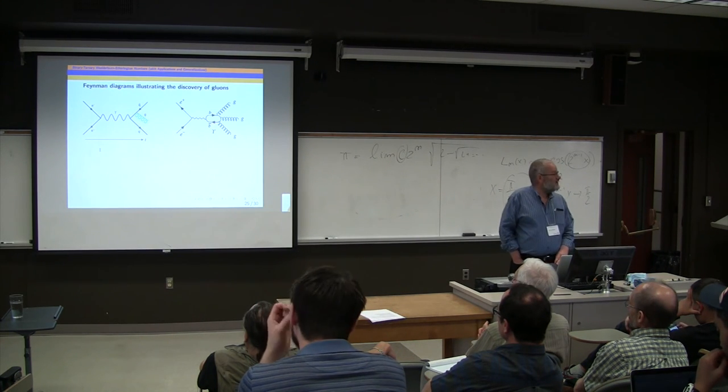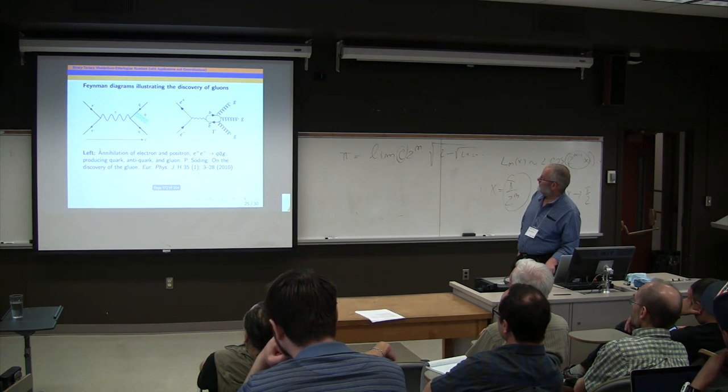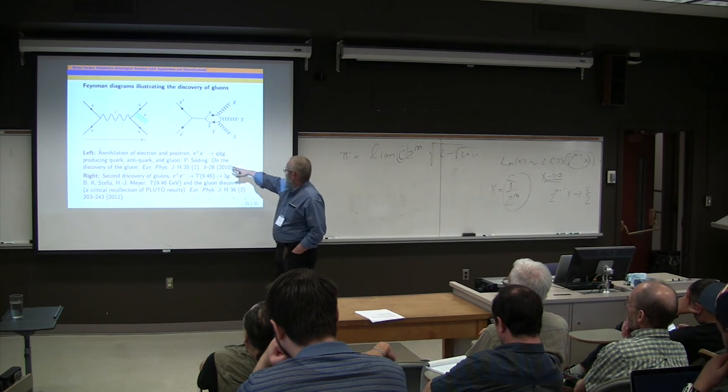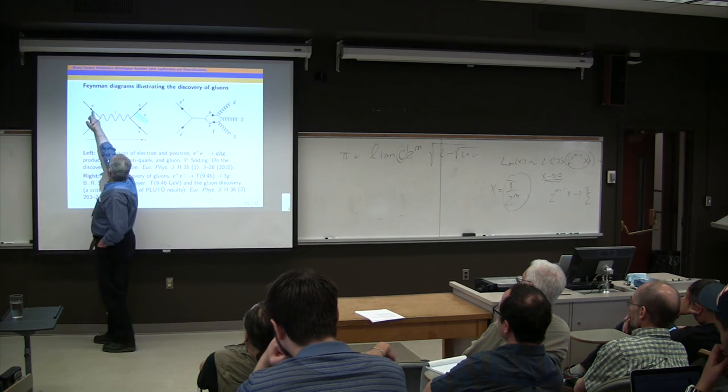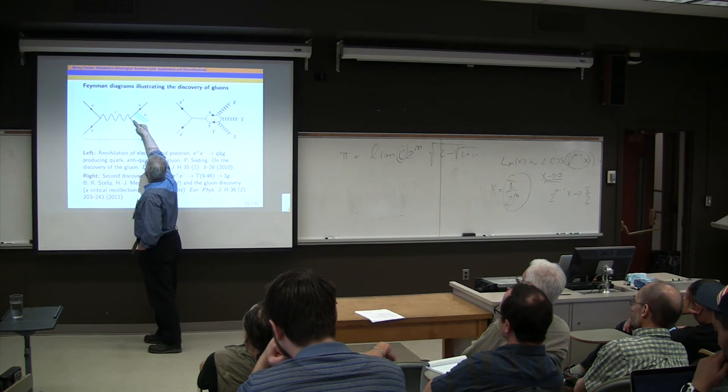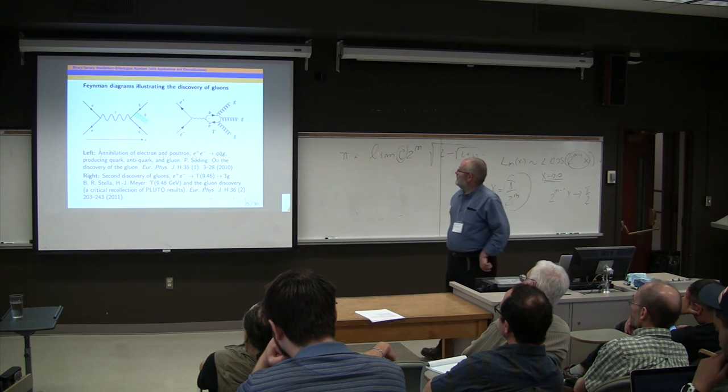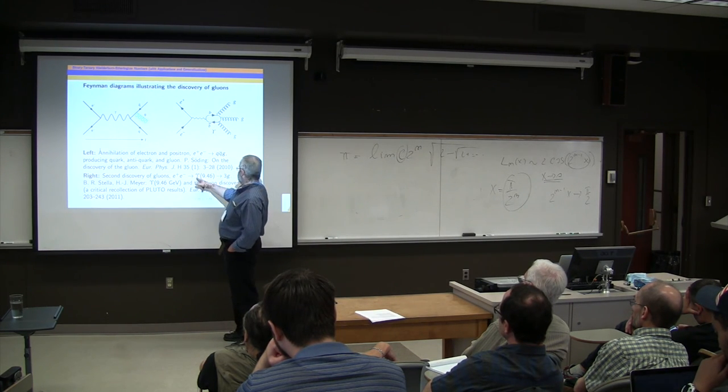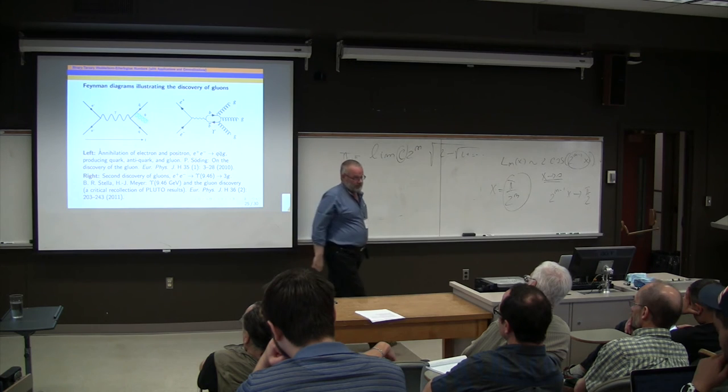And, well, just about out of time. These are from the Wikipedia article for gluons, which are the Feynman diagrams illustrating how gluons were discovered. And there's a couple of nice historical articles about this in the European Physical Journal. You can annihilate an electron and a positron, and you get a quark and an anti-quark, and a gluon sort of flies off on the side there. Or you can do the same sort of thing and get a meson, this upsilon meson, with a bottom quark and an anti-bottom quark, which then decomposes into three gluons. These have actually been observed in large hadron colliders and whatnot.